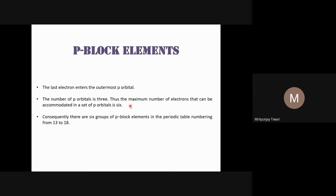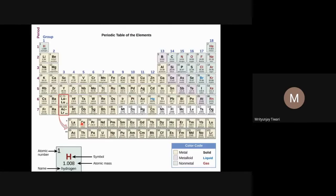The maximum number of electrons that can be accommodated in the P-orbitals is six. Consequently, there are six groups of P-block elements in the periodic table, numbered from 13 to 18.